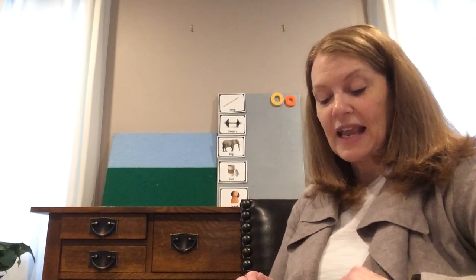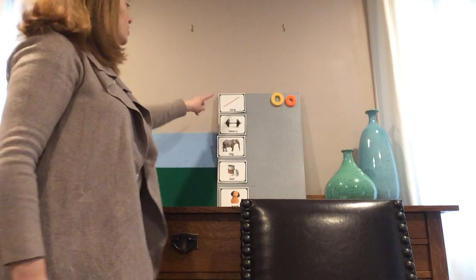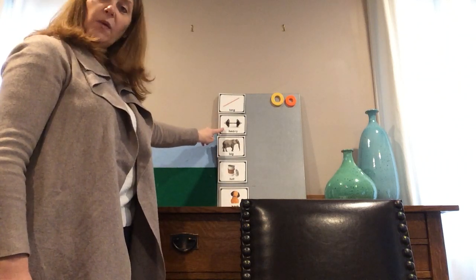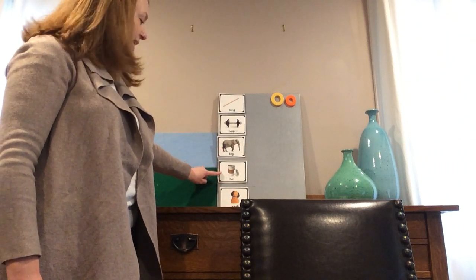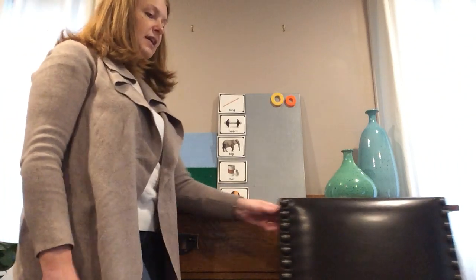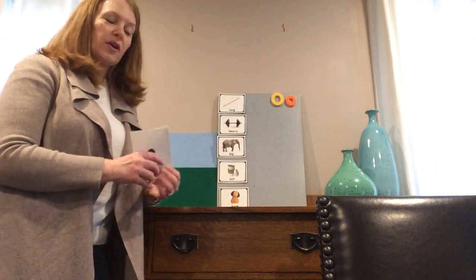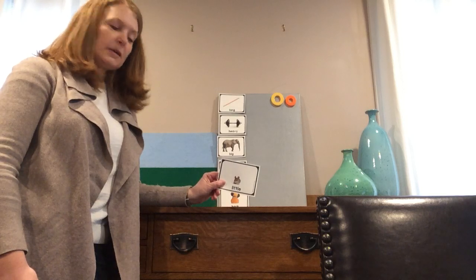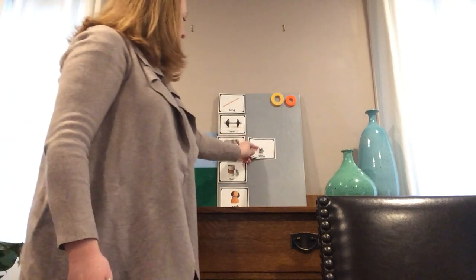Now we're going to play a little game with some opposites, and I bet you'll know the answers. On my magnet board I have some words and pictures: a pencil that says long, a weight that says heavy, an elephant that says big, coffee that says hot, and a little dog card that says back. I have a little tiny mouse — what do you think mouse would go to? Little, and the opposite of little is big. Little and big — opposites!